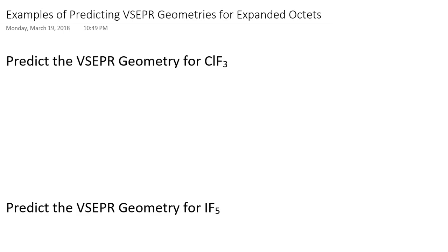If you recall yesterday's lesson and the pre-lecture tutorial that preceded it, essentially what we did is we took a look at the geometries of molecules and polyatomic ions that had no more than four electron domains. We covered linear, trigonal planar, and tetrahedral electron domain geometry, and then broke down how the existence of lone pairs on the central atom influenced the molecular geometries we observed.